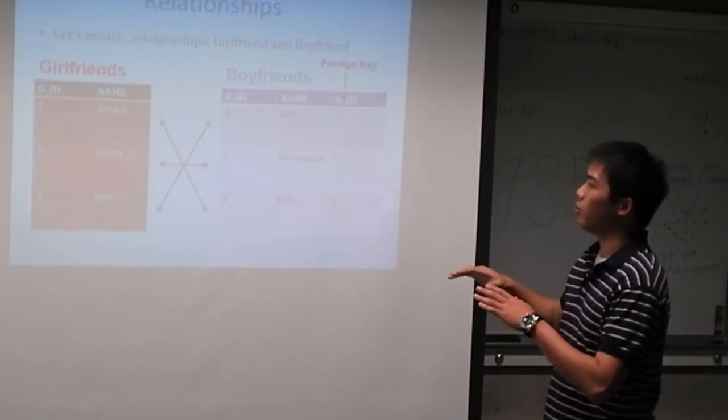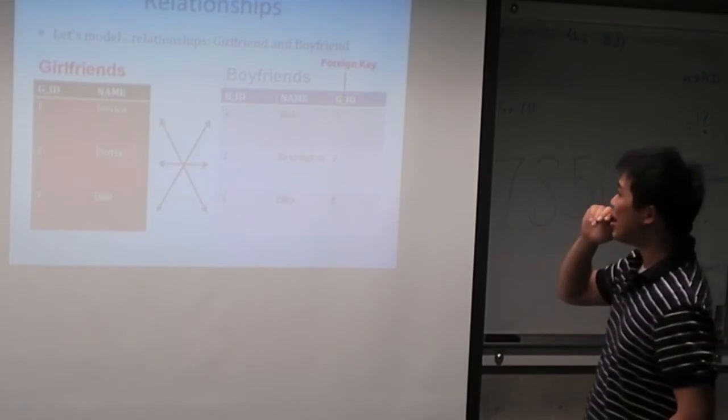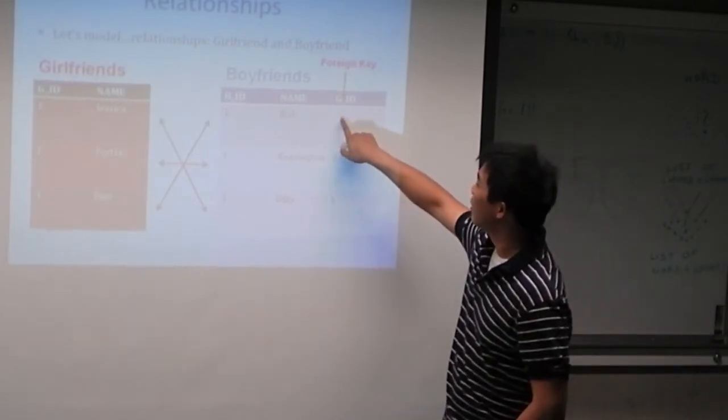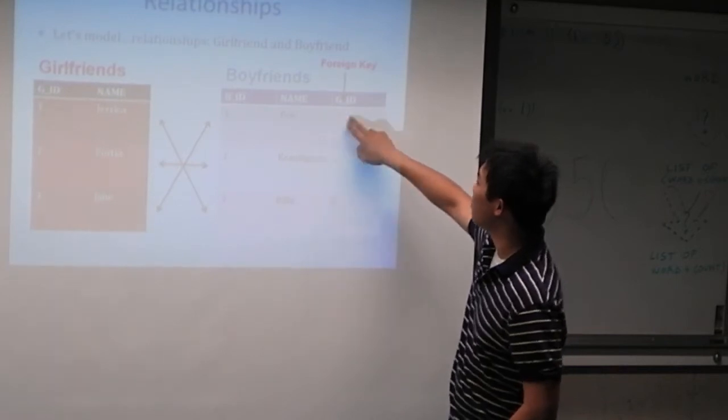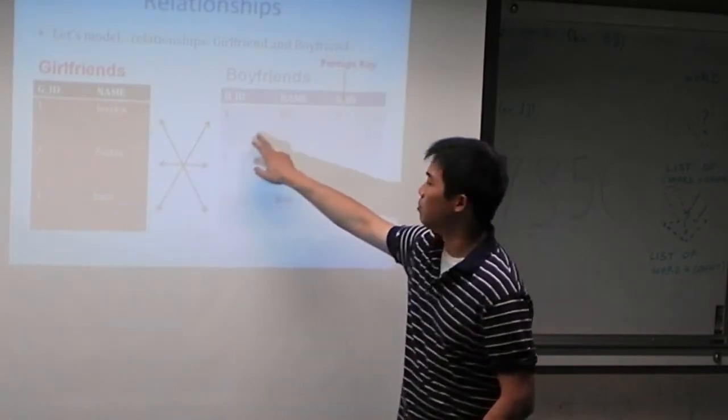And what that allows us to do is tie in these two tables together. So we know who or which boyfriend is matched with which girlfriend. Of course in this case, if we try to look at the table and we match this girlfriend ID three to one over here, we can see that Jane is matched up with Bob.